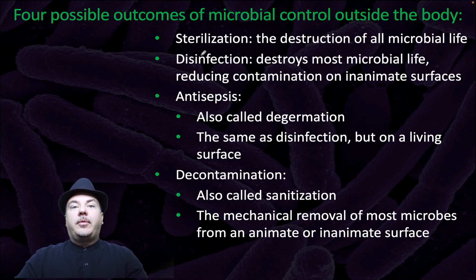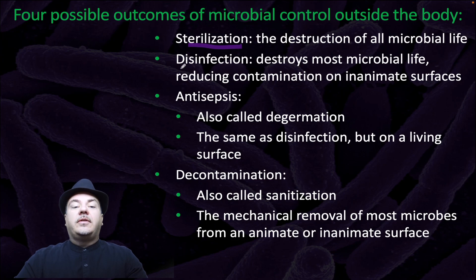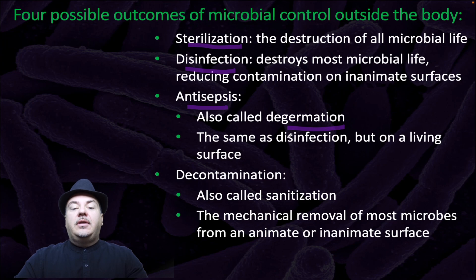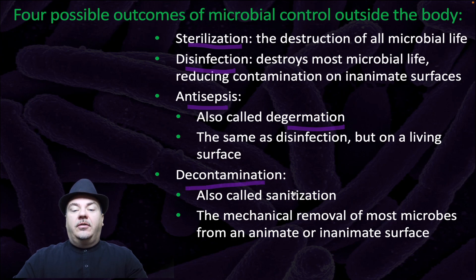Possible outcomes for microbial control include sterilization, which is the destruction of all microbial life, or disinfection, which destroys most microbial life, reducing contamination on inanimate surfaces. Antisepsis, also called de-germination, is the same as disinfection but on a living surface. Or decontamination, also called sanitation, which is the mechanical removal of most microbes from an animate or inanimate surface.